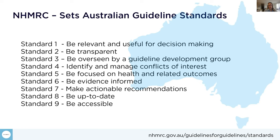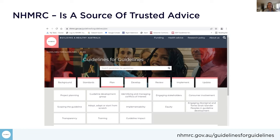NHMRC is also a source of trusted advice. The Guidelines for Guidelines is what we call the 'how to do it' side of things. This handbook was created a few years ago to help guideline developers produce high quality guidelines that meet the 2016 guideline standard. Importantly, this handbook was actually created by the guideline development community in Australia, so thank you to everyone who contributed to this really valuable resource.